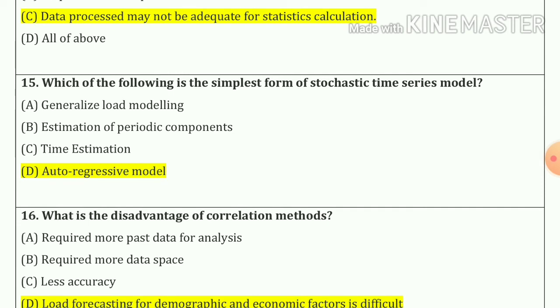Question number 15. Which of the following is the simplest form of statistical time series model? So our answer is autoregressive model, option number D.